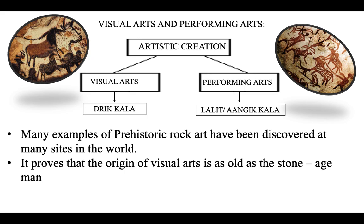Artistic creations are of two types: visual arts and performing arts. Visual is something that you can see — like paintings. Performing arts is where you perform, like dancing and singing. The Sanskrit term for visual arts is Drikkala, and for performing arts, Lalit or Angikkala. Drikkala means visual arts where you can see it, whereas Lalit or Angikkala is where you showcase your skills, talents, and fine arts.